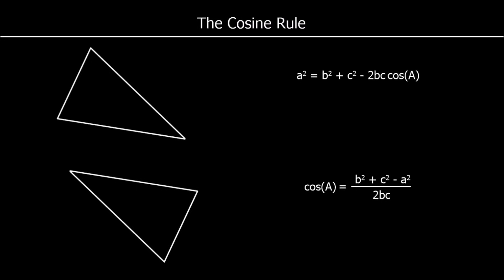We use the cosine rule to find a missing length or a missing angle in a triangle. We don't use it for right angle triangles because it's easier to use Pythagoras and SOHCAHTOA. So we use it for non-right angle triangles, as well as the sine rule.